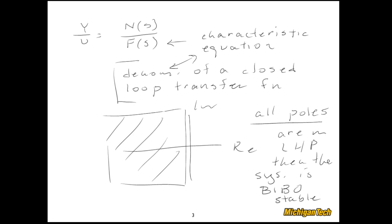Goes the other way too. For a linear system, if the system is BIBO stable, you know that all the poles are in the left half plane, none on the imaginary axis and none on the right half plane.